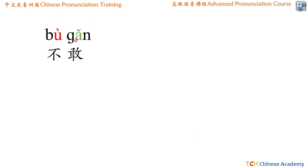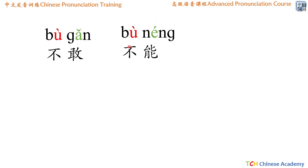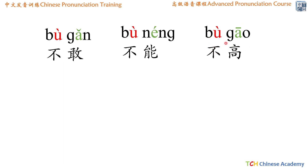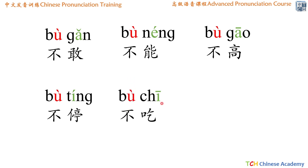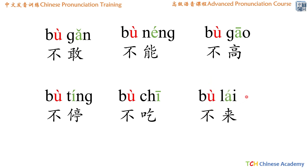Now let's look at more phrases with 不 in the fourth tone. 不敢 (bù gǎn) — they dare not. 不能 (bù néng) — cannot. 不高 (bù gāo) — 高 means tall or high, so 不高 means 'not tall.' 不停 (bù tíng) — 停 means stop, so 不停 means 'non-stop.' 不吃 (bù chī) — 吃 means eat, so 不吃 means 'not eat.' 不来 (bù lái) — means 'not come.'